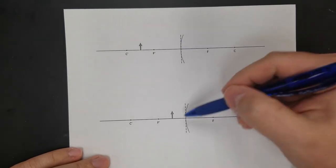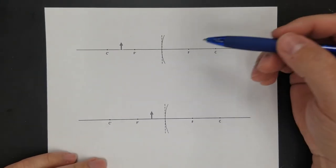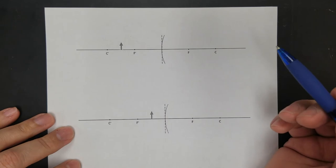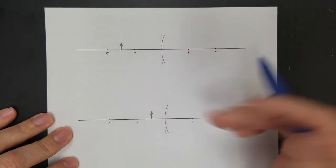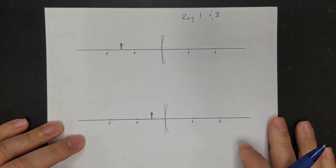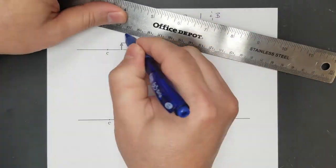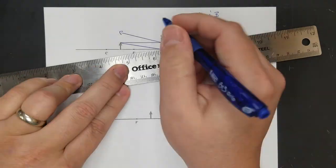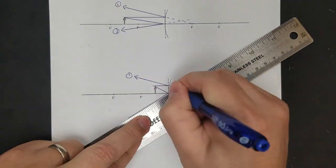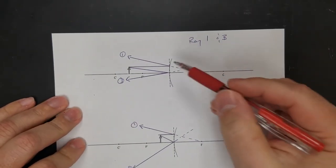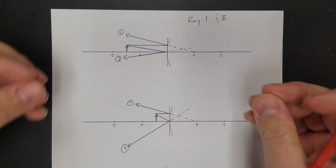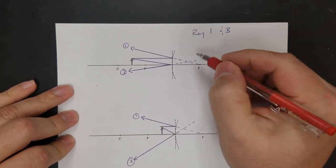Now we've got a diverging mirror. Diverging mirrors are the same concept as a diverging lens — so instead of going towards the focal point, you go away from an antifocal point. I'm going to draw two ray diagrams, and I'm only going to draw ray one and ray three. You never get a real image with a diverging mirror or lens.